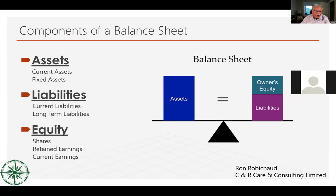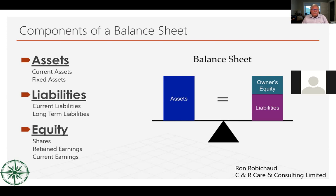Equity has three categories: the shares when you incorporated the company, retained earnings which are profits and losses from previous years carried forward, and current earnings which is your year-to-date profit. For incorporated companies this is critical. For sole proprietors, you and the business are one in the same — personal and business assets and liabilities are combined — but it's still ideal to have a balance sheet to understand your cash flow.